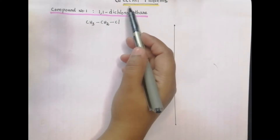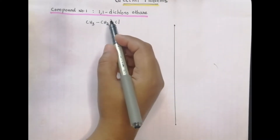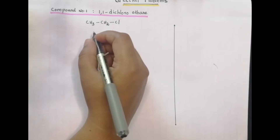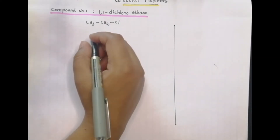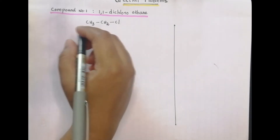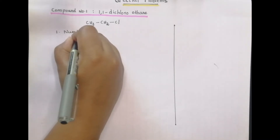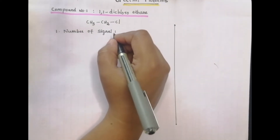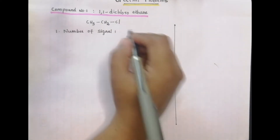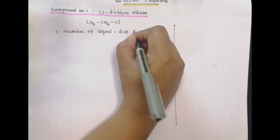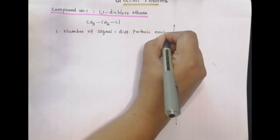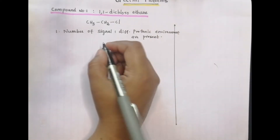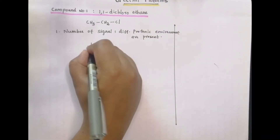We are going to discuss spectral problems. The first compound is 1,1-dichloroethyl. Now we are going to discuss the NMR spectrum in this class. First of all, we have to discuss NMR interpretation. Step 1 is the number of signals — how many different kinds of protonic environments are present in the compound?